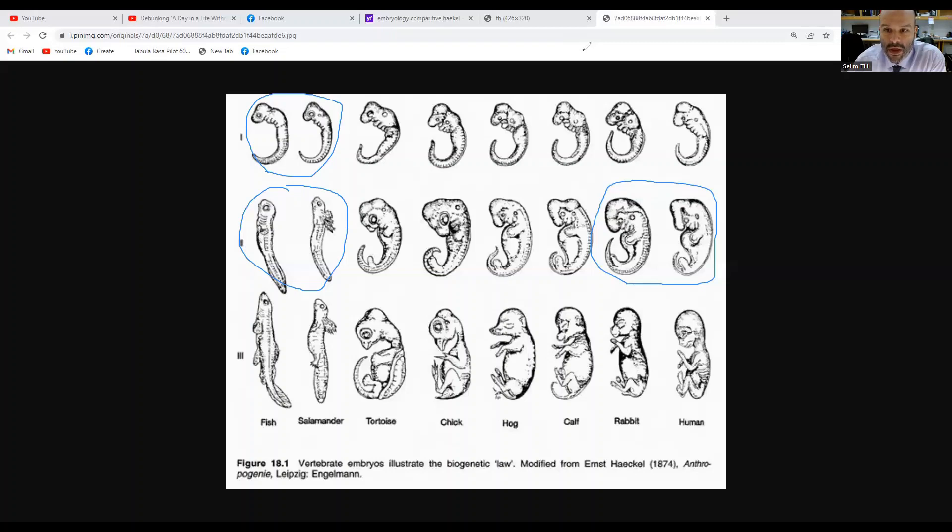Now the challenge with this image is that drawn in 1874, it's not exactly accurate. It's possible that Haeckel was trying to prove a point or that he had a conclusion that he wanted everyone to have, and so we can't just trust these images exactly.